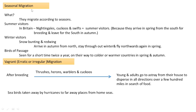Next is seasonal migration. As the name indicates, it is migration behavior that takes place according to season. Under this we have summer visitors — birds that can be located only during summer in Britain. An example is the nightingale.